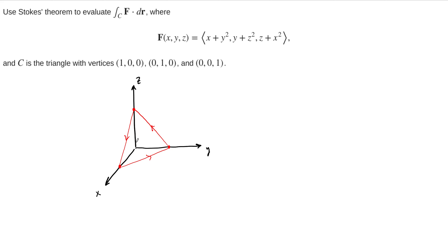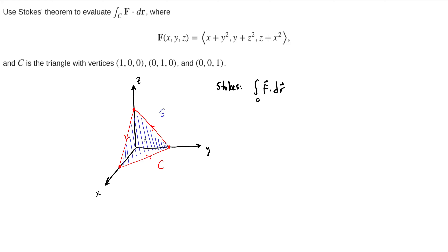Stokes' theorem says that instead of integrating along this path C, we can think of any surface that is bounded by this path. So why not just think of the portion of the plane bounded by this path? We'll call that surface S. Then we can compute the work done by this vector field around path C by taking a double integral over the surface of the curl of this vector field dotted with dS.